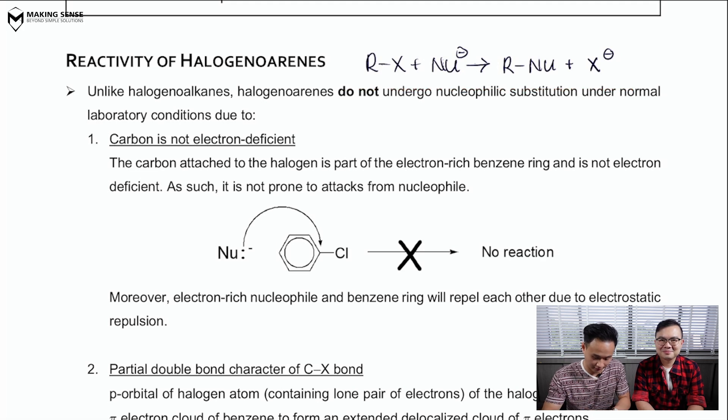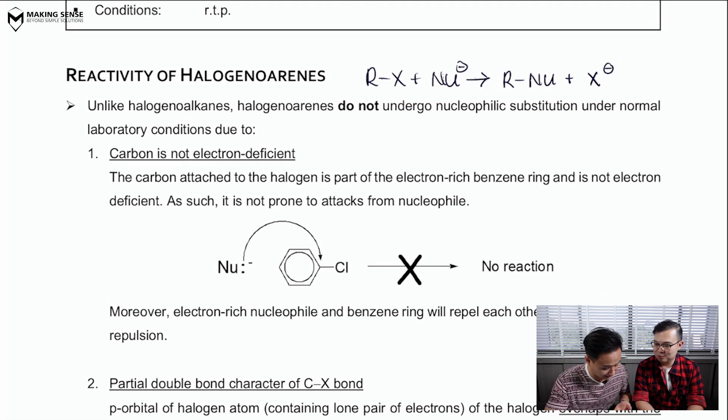Now, in halogenyl alkanes, we saw that the R or the carbon attached to the halogen is electrophilic. So, your nucleophile can attack that R group or that carbon and break that C-X bond.